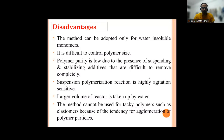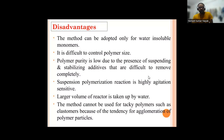Disadvantages of suspension polymerization: the method can be adopted only for water-insoluble monomers. It is difficult to control polymer particle size. Polymer quality is low due to the presence of suspending and stabilizing additives that are difficult to remove completely. The reaction is highly agitation-sensitive. A larger volume of reactor is taken up by water. The method cannot be used for tacky polymers such as elastomers because of the tendency of agglomeration of polymer particles.